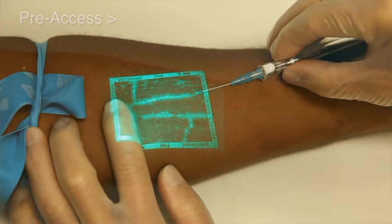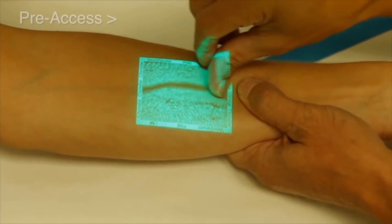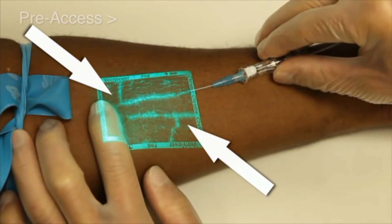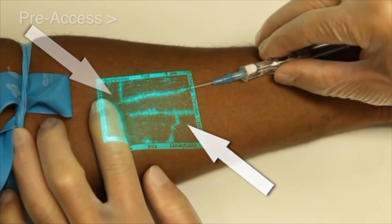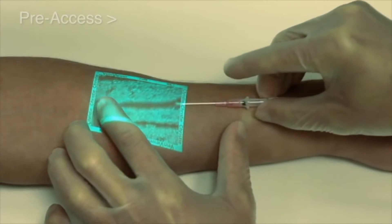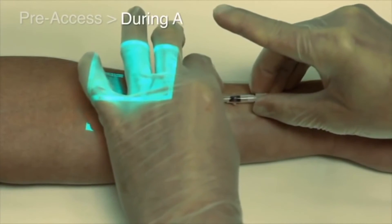The advantages of locating vessels up to 10mm deep and identifying clinical decision points such as valves, bifurcations, and the real-time refill rate of the vessel are key to your procedural needs in choosing the optimal access site.